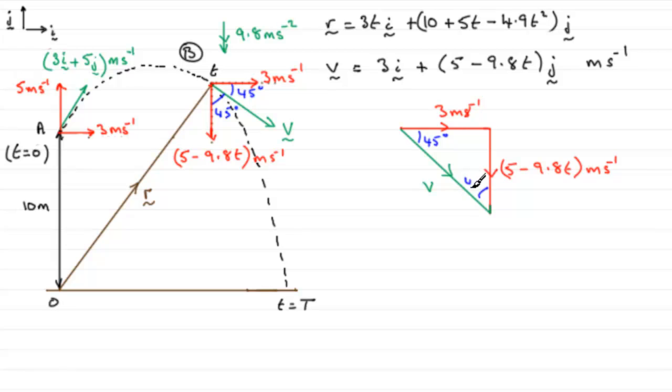Now we know that that angle has to be 45 degrees as well, because it is a right angle triangle. This right angle triangle, because we've got these two angles the same, must be an isosceles triangle. These two lengths must be exactly the same.